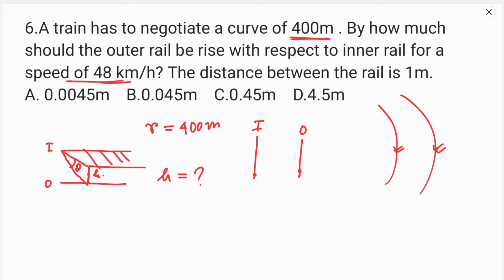This is the banking problem. I will show you the inner rail. The height is L, the distance between the rails, and the base is B.